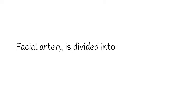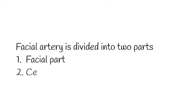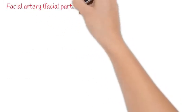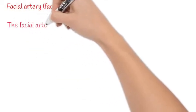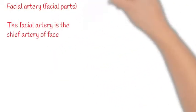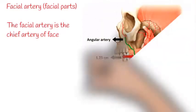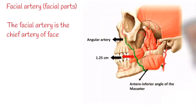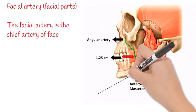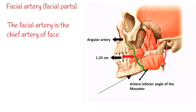The facial artery is divided into two parts: cervical and facial. The facial artery is the chief artery of the face. It enters the face by curving upward over the body of the mandible at the anterior inferior angle of the masseter.